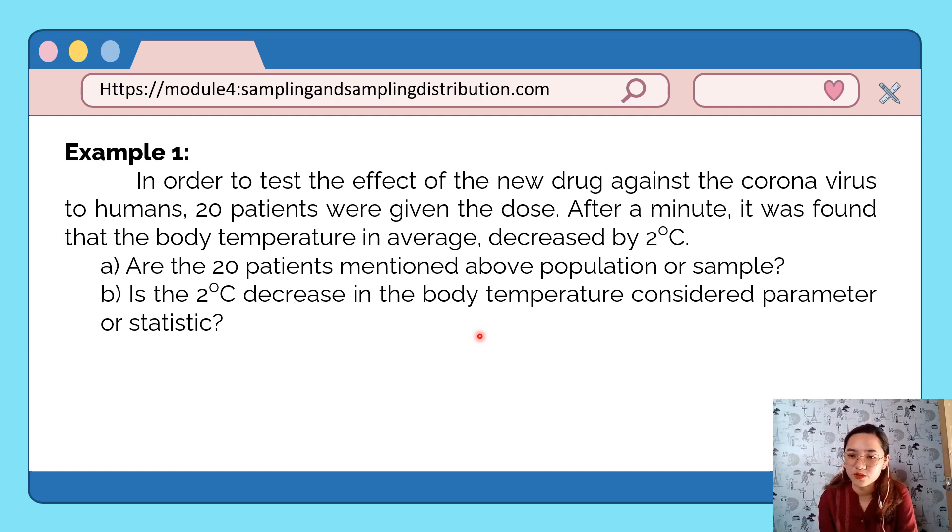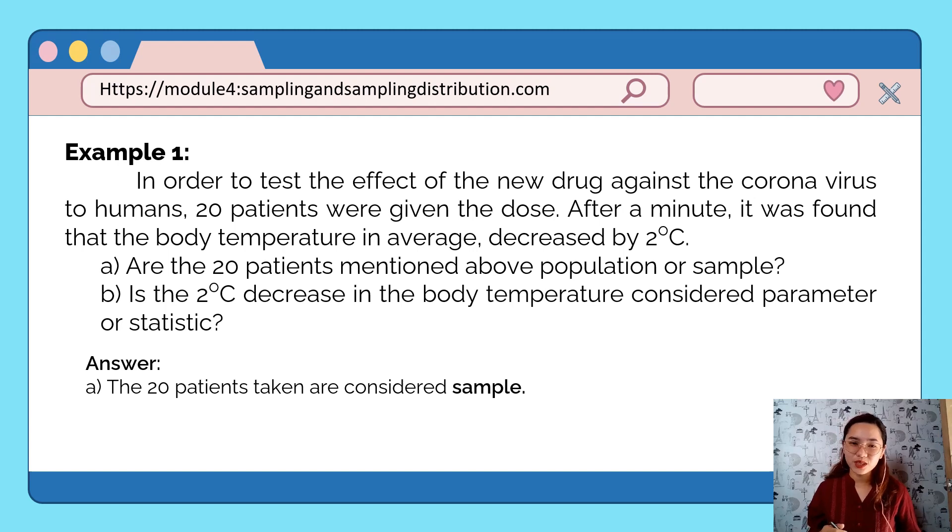The 20 patients are considered a sample because not all patients - there are many patients with coronavirus - only 20 patients were chosen, which is a part of your whole population. Therefore, it's considered a sample. Next, the 2-degree Celsius decrease in body temperature - what does this describe? Of course, it describes our 20 patients.